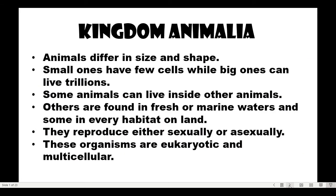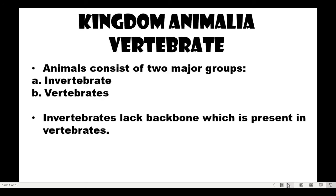Now we will talk about Kingdom Animalia vertebrates. Again, Kingdom Animalia — the animals differ in size and shape; small ones have few cells while big ones have trillions. They can live inside other animals, in fresh or marine waters, or on land. They reproduce sexually or asexually and are eukaryotic and multicellular. We have two groups: invertebrate and vertebrate. We are done with invertebrates; now, vertebrates — they have a backbone.